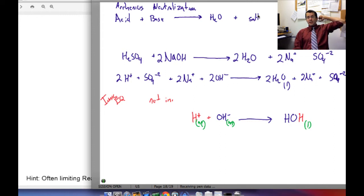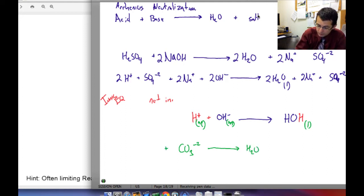Now the counter ions may also be involved and they may produce precipitates or they may produce gases, particularly when CO2 is involved. Carbonates, particularly when they're treated with acid, are unstable and split into water molecules and CO2 gas. The gas is released as bubbles.